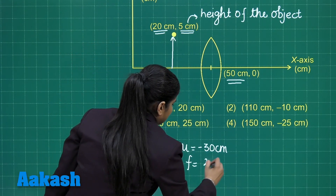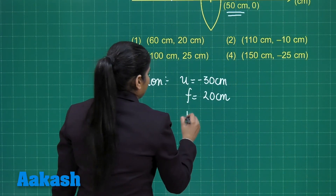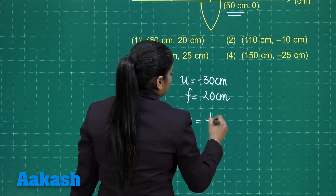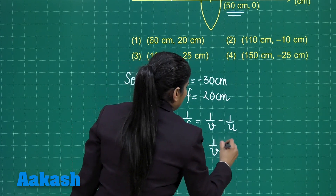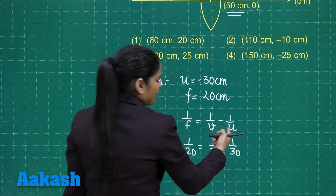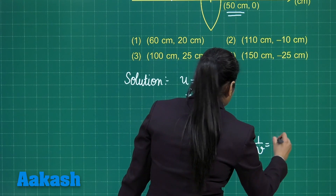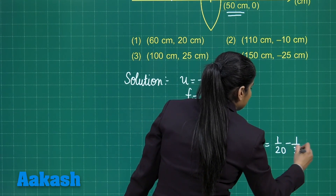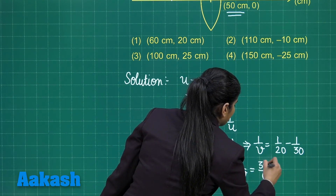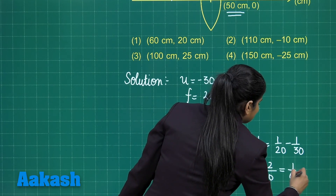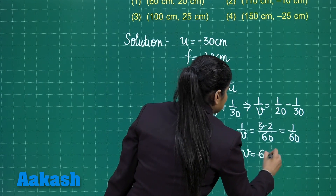F = 20 cm. Applying the lens formula 1/F = 1/V − 1/U: 1/20 = 1/V + 1/30 (since U = −30 makes the term positive). So 1/V = 1/20 − 1/30 = (3−2)/60 = 1/60. Therefore V = 60 cm.